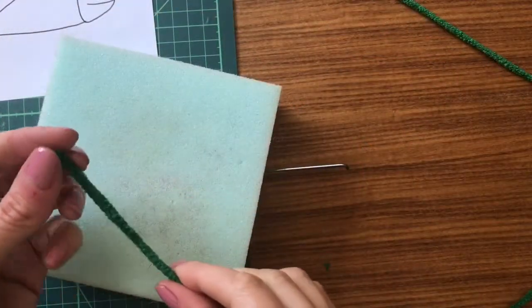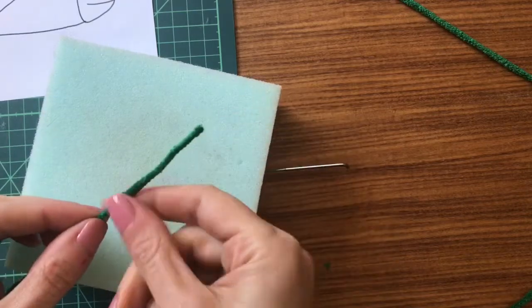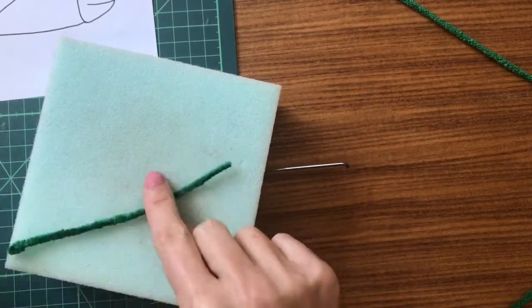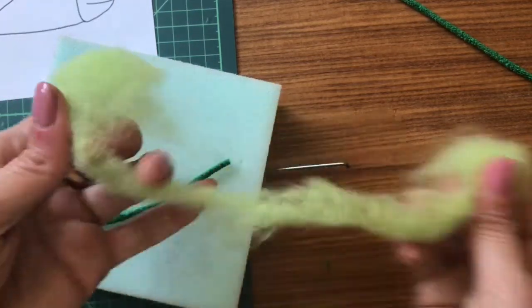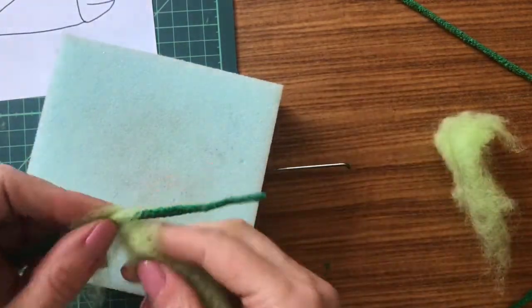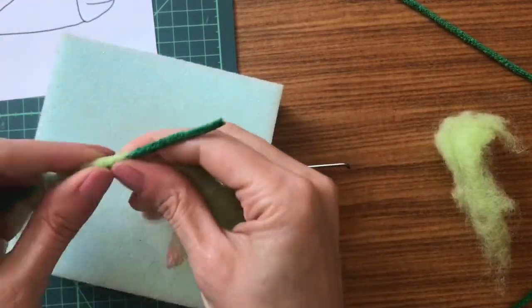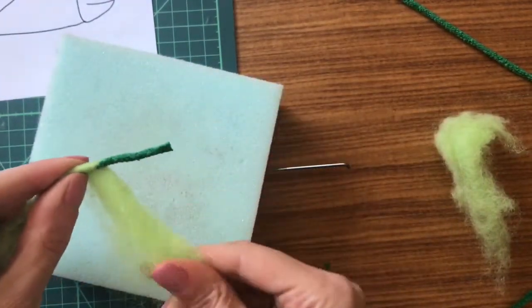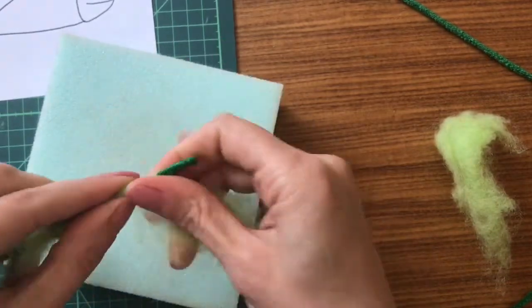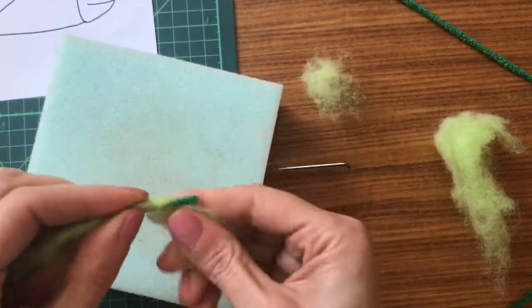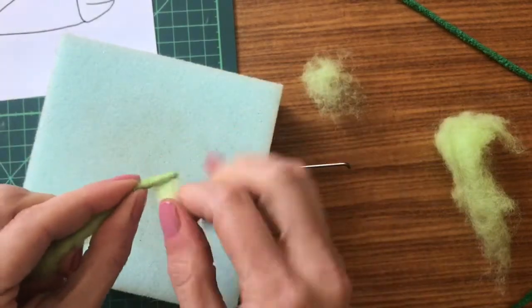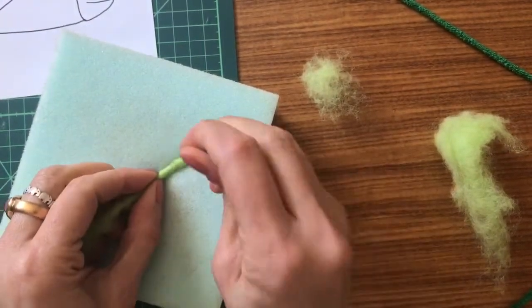I've cut my pipe cleaner to length and bent the head end over. I'm going to start wrapping the tail end now with some green carded wool. Needle felt that into place.